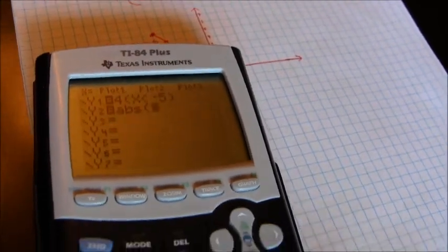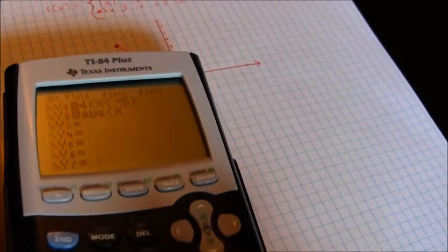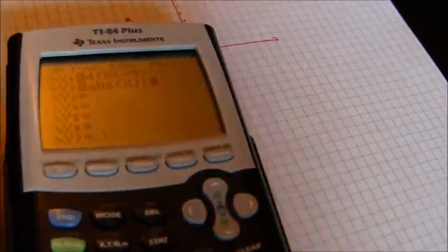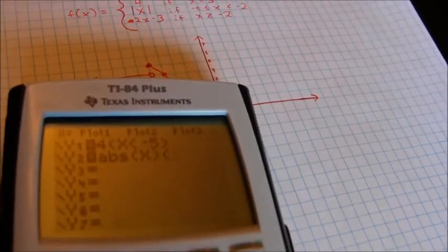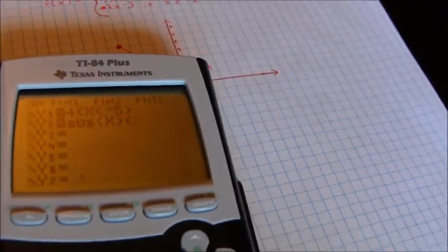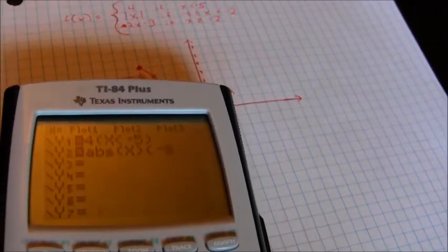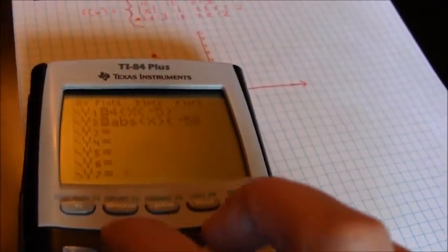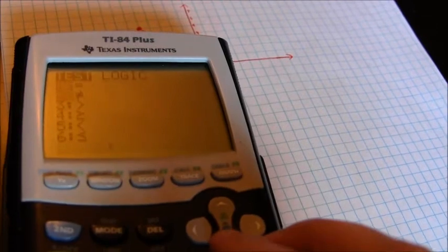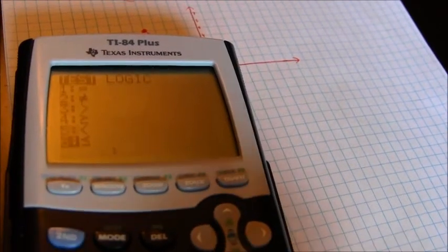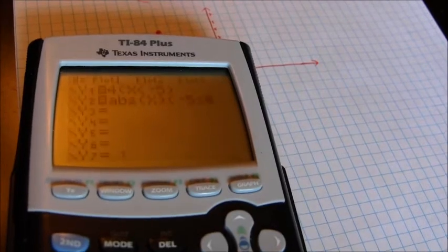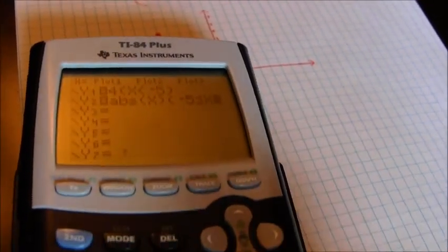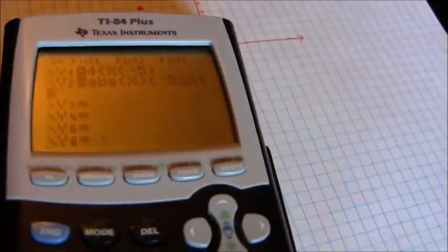So I want the absolute value of x, and then I want this for two values. I want it when x is greater than or equal to negative 5. So I'll type in my negative 5, and I'm going to go to test, and I've got the less than or equal sign there, and then I need a second bound.